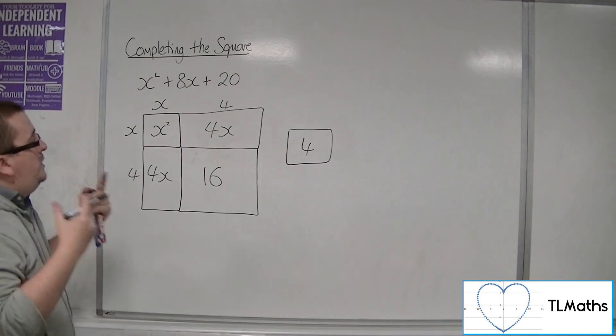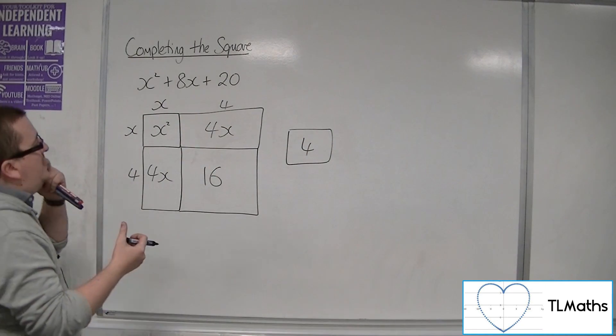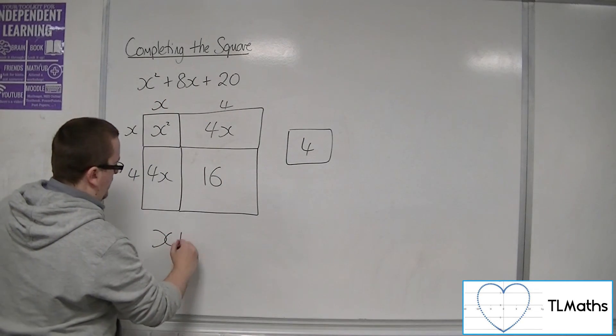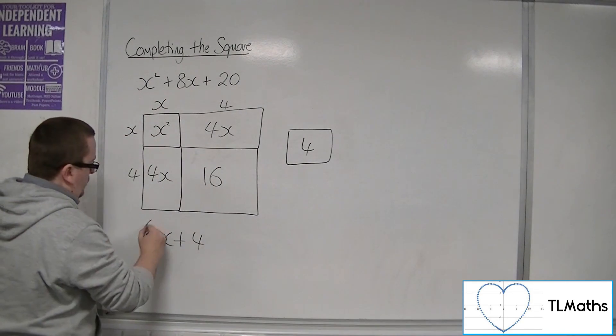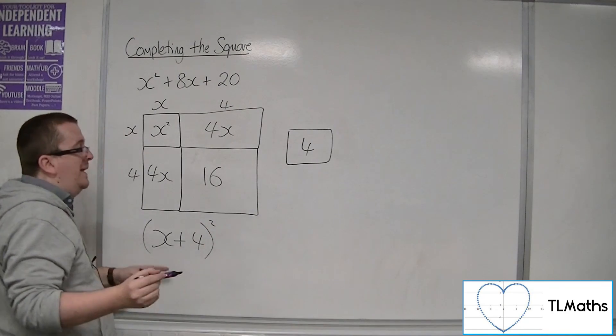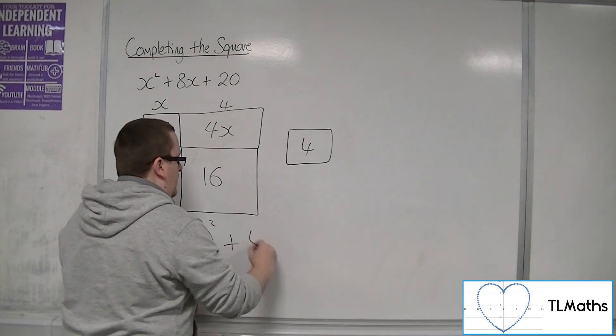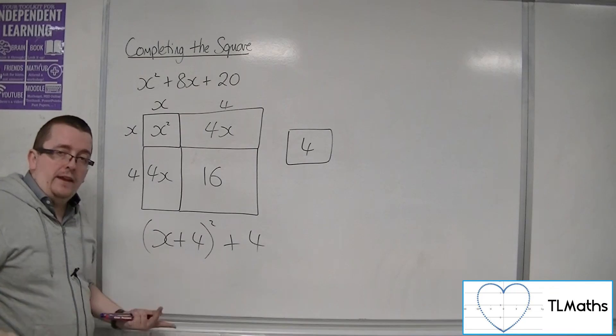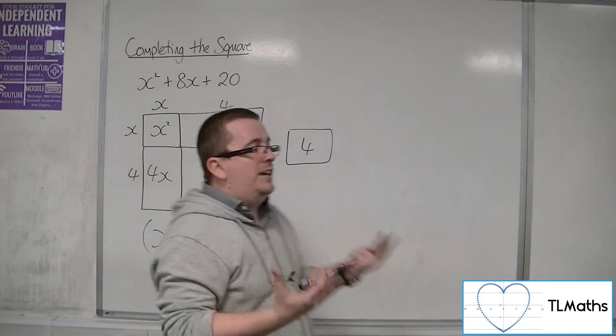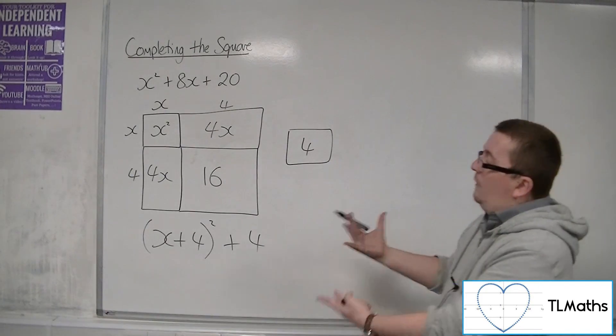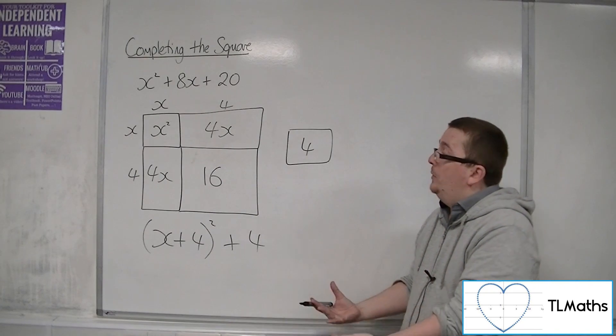So visually, what this is representing is I've got x plus 4 times x plus 4, so x plus 4 squared, and I've got this extra plus 4 on the end. So that's actually what's happening. That's what completing the square is actually doing.